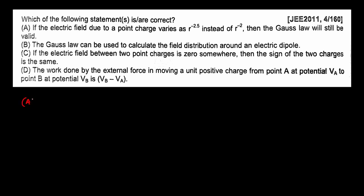Let's begin with the first one. If the electric field due to a point charge varies as r to the power minus 2.5 instead of r to the power minus 2, then will Gauss's law still be valid? We know that if the electric field is given by kq over r squared times r-hat, and we use this with Gauss's law — the surface integral of the electric field over a closed volume — we get q enclosed over epsilon naught.